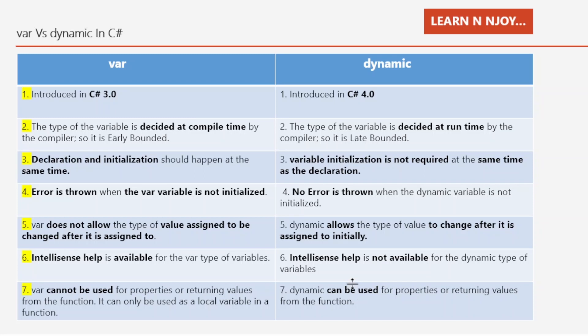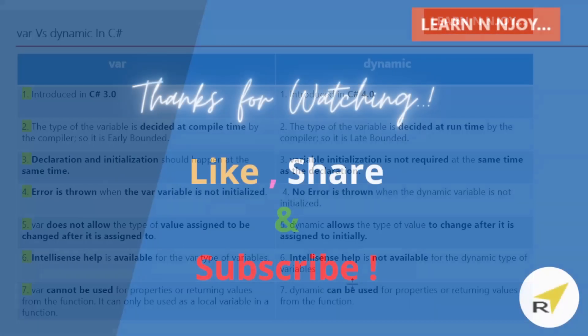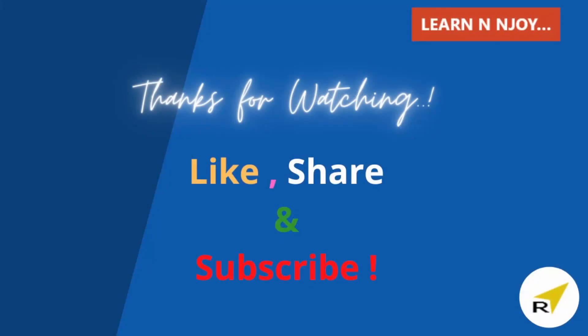That brings me to the end of this session. To sum up, in this video we learned what var and dynamic keywords are in C#, how and when to use them in a program, and the differences between them. If you liked this video, hit the like button, share it with your friends and colleagues, and subscribe to my channel if you haven't already. Thanks for watching, see you in the next video.